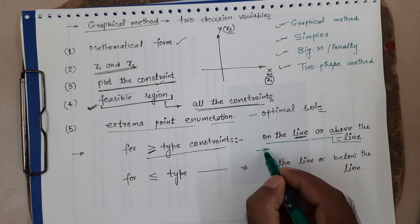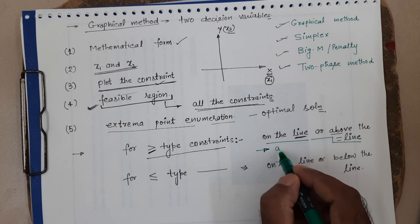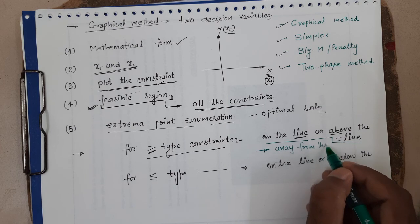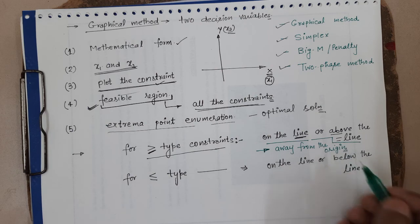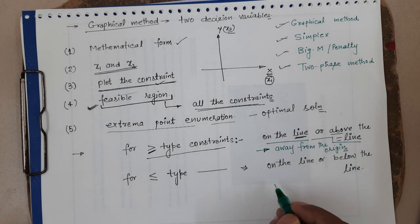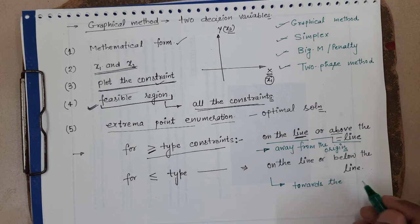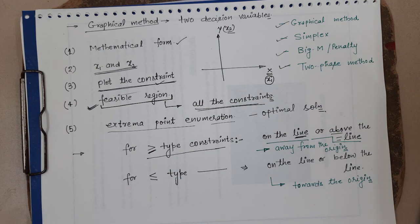We can also think of it another way: for greater-than-or-equal-to constraints, the feasible region is on the line or away from the origin. For less-than-or-equal-to type, the feasible region is towards the origin. That is the theory part for the graphical method.